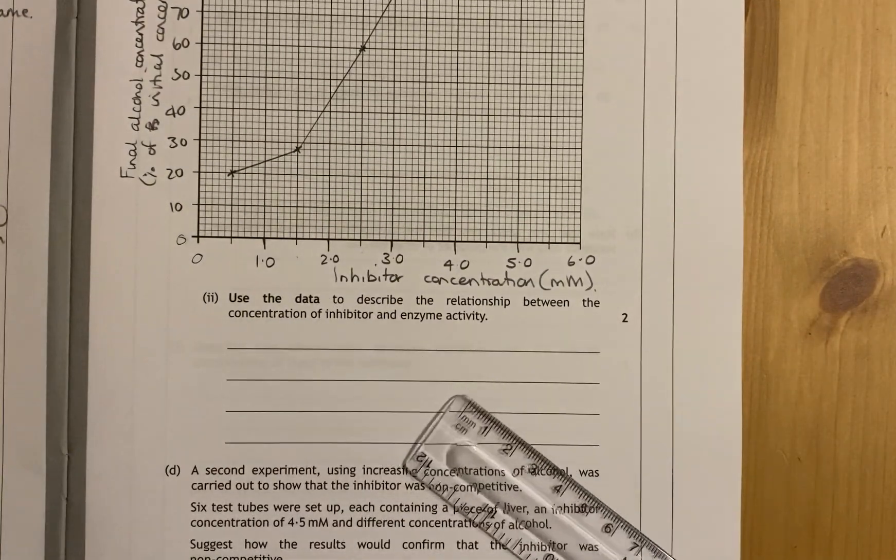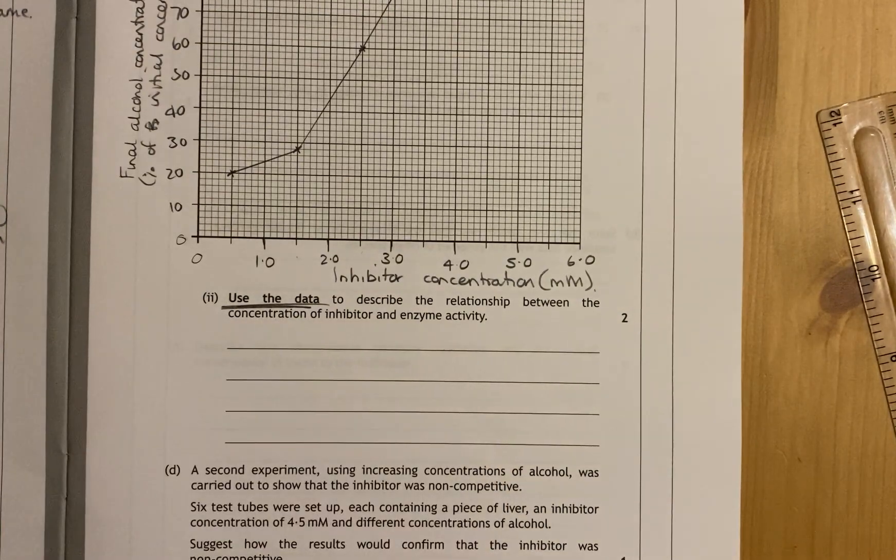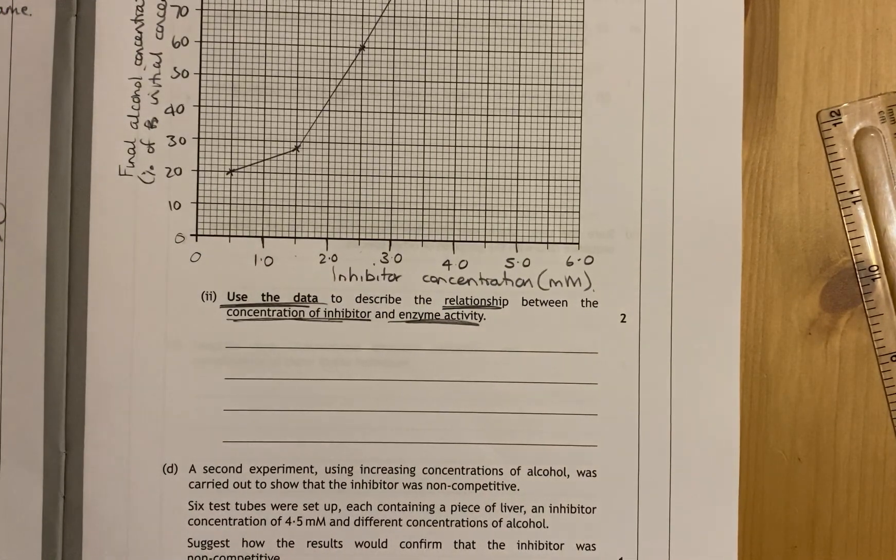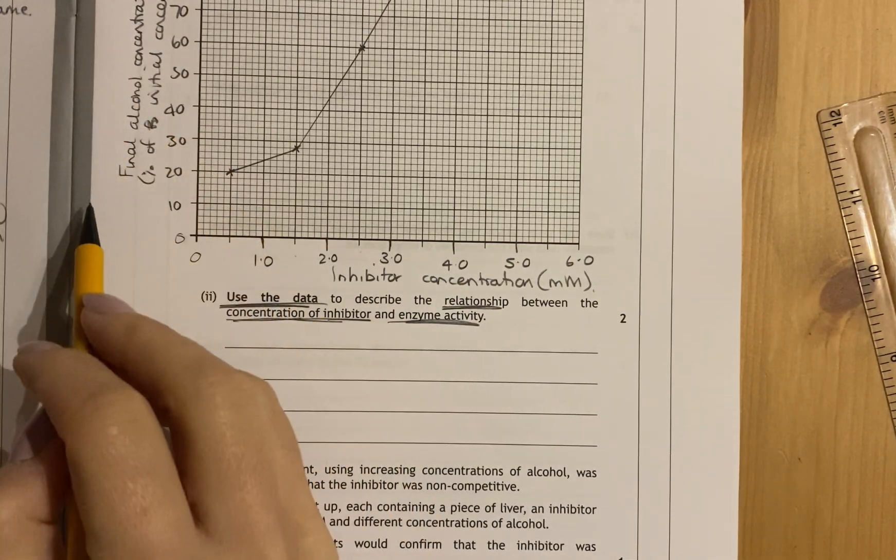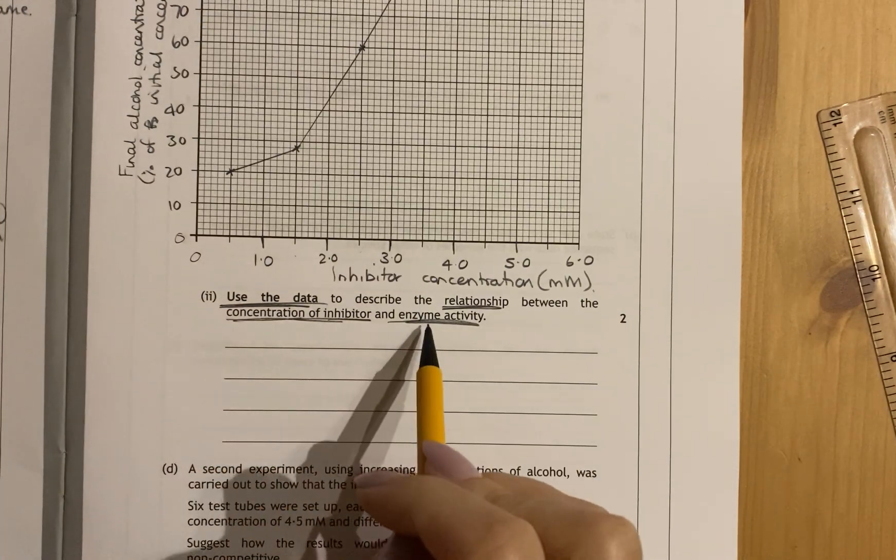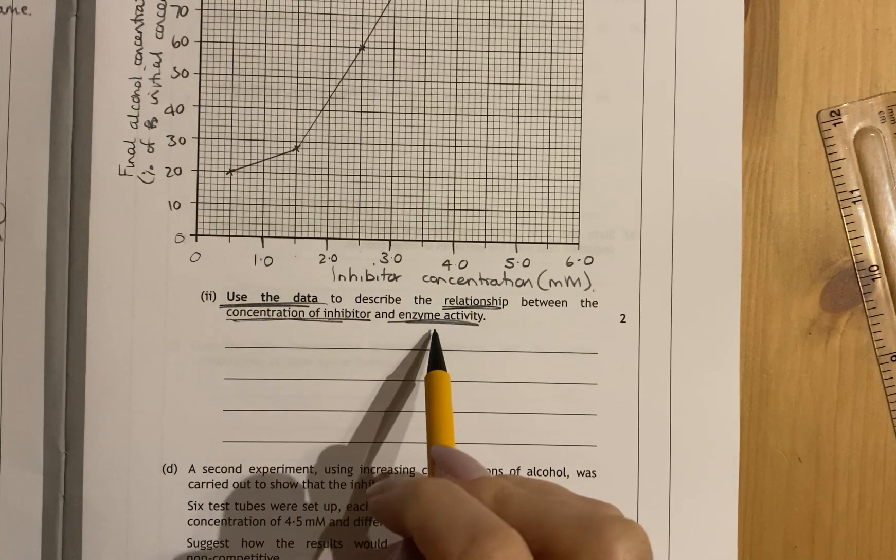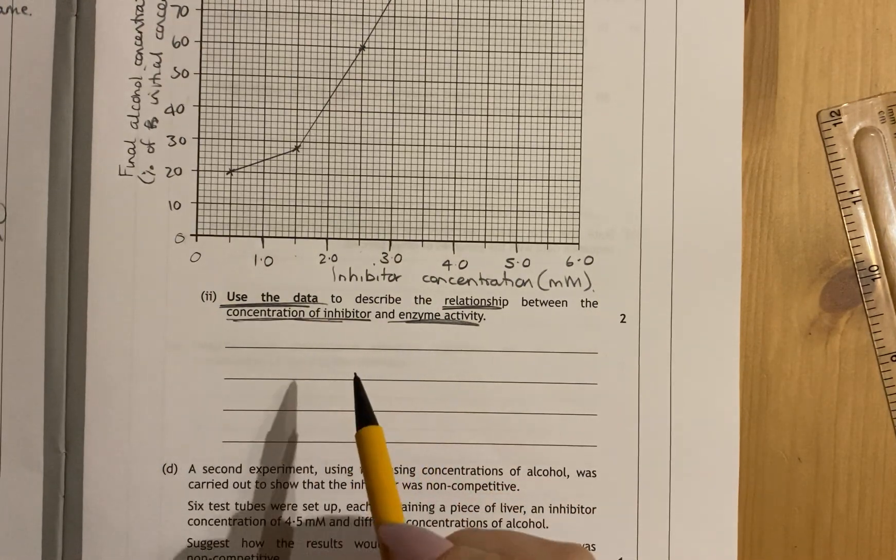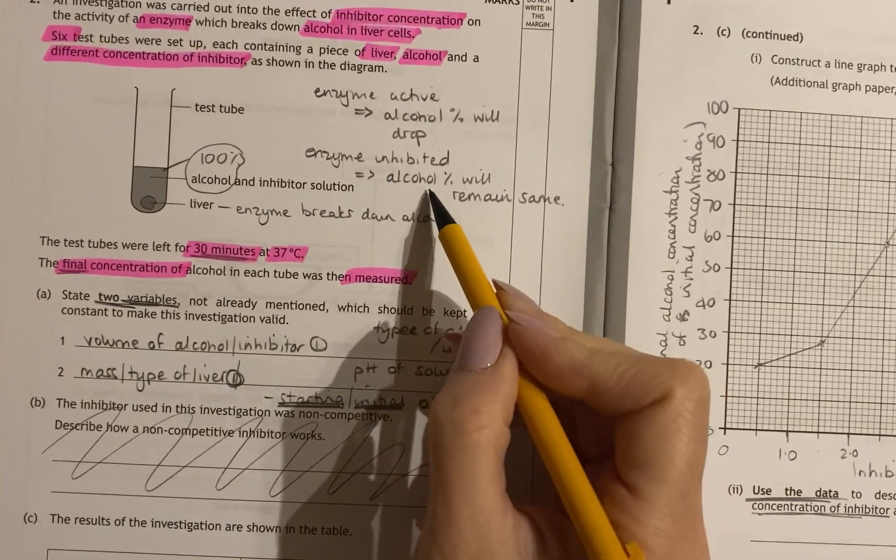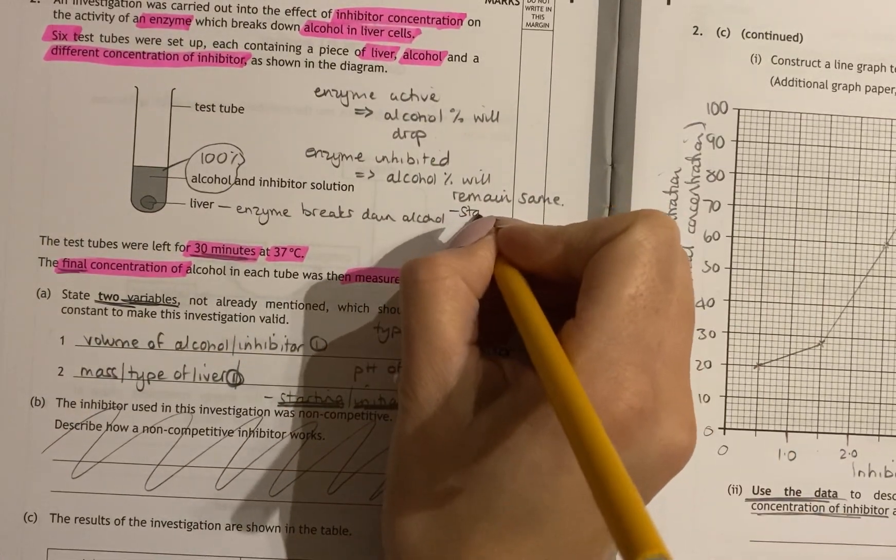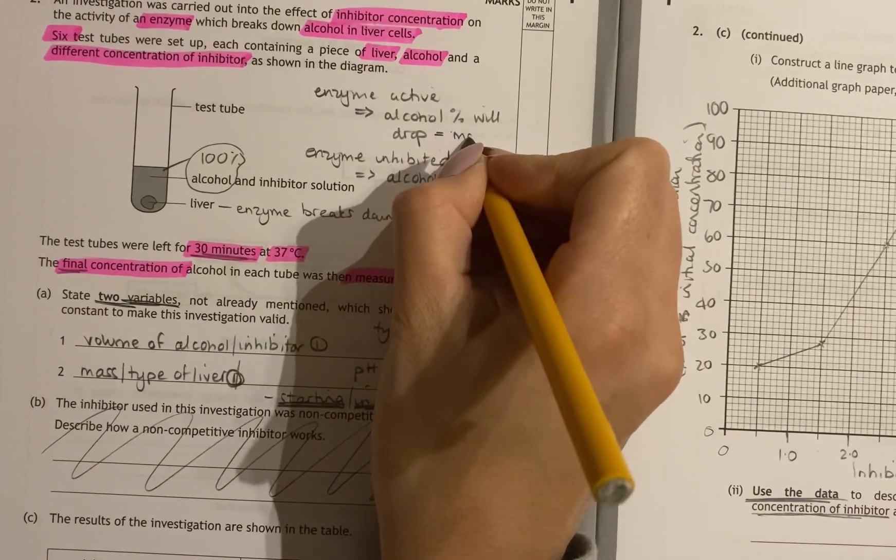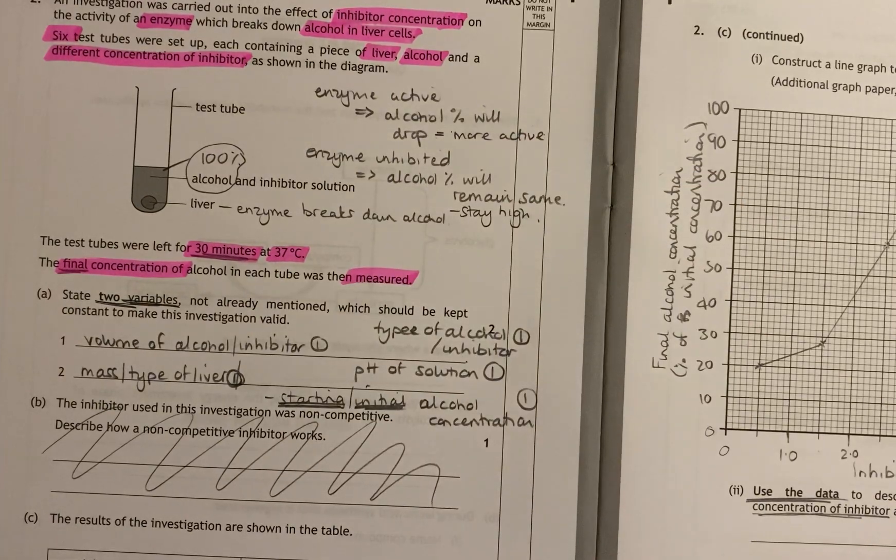Now, the next question, which is a fairly common question, is using data, describe the relationship between concentration of inhibitor and enzyme activity. Now this up the side does not tell us - well, it's not what they're asking for. They're not asking for final alcohol concentration. They're asking for enzyme activity. So basically, you've got to make a relationship between more alcohol, meaning less activity. So, if we think of what we talked about before. If the enzyme is inhibited, the alcohol concentration would stay high. So when alcohol concentrations drop, that enzyme is more active. So this is quite a complex question.